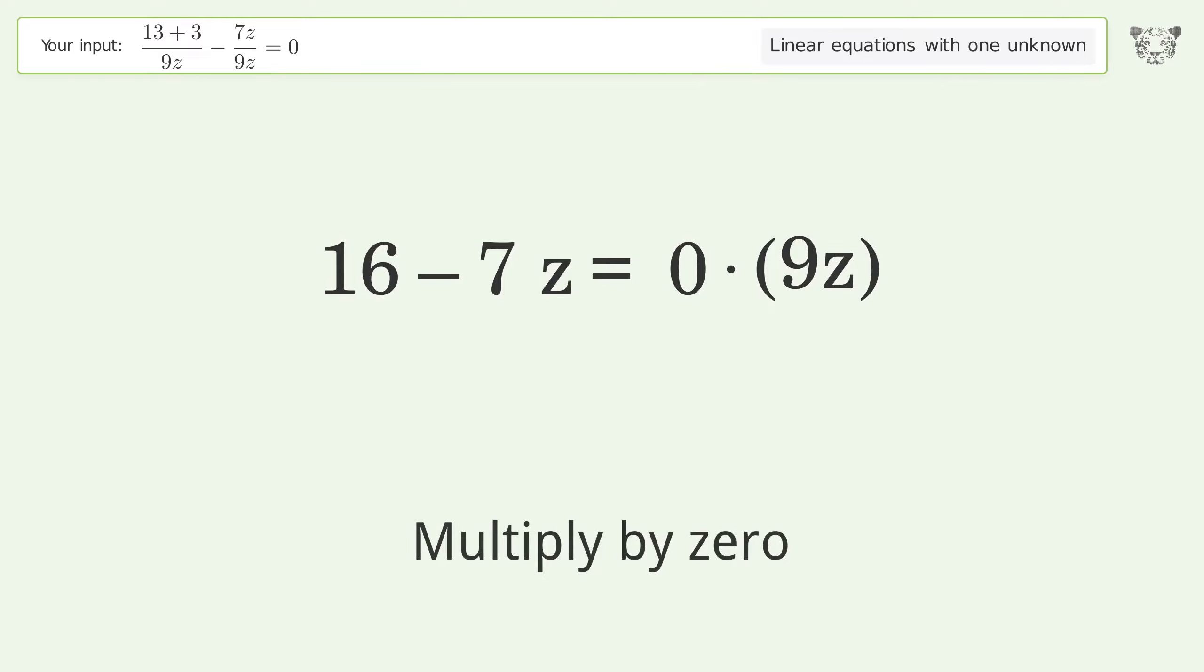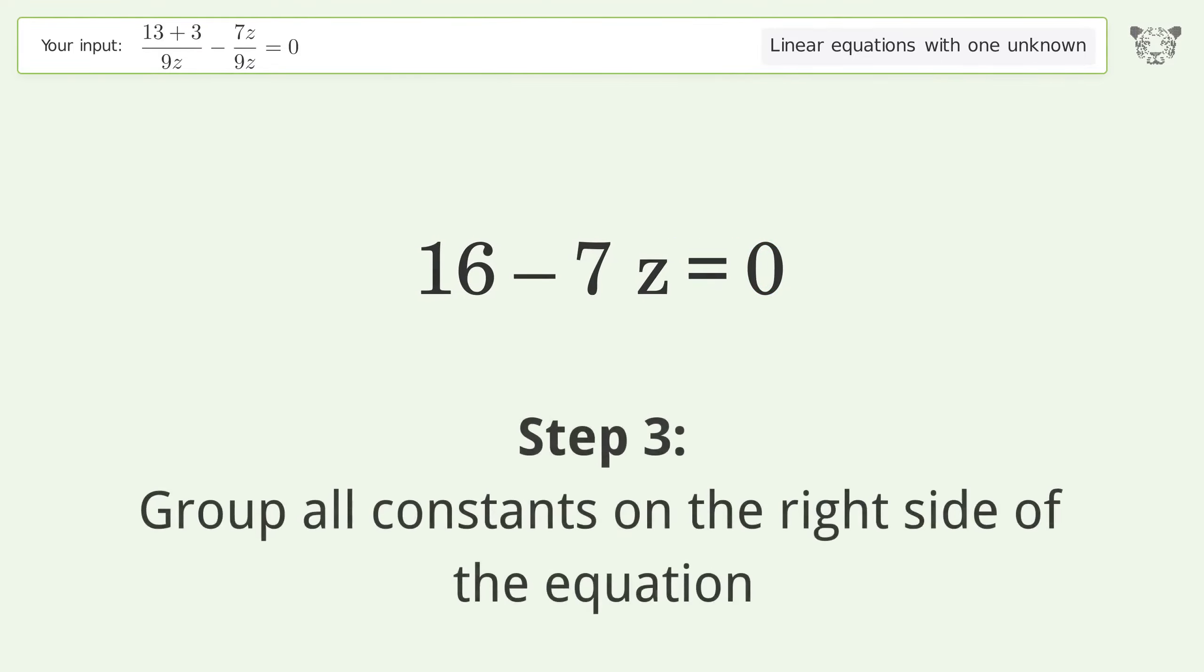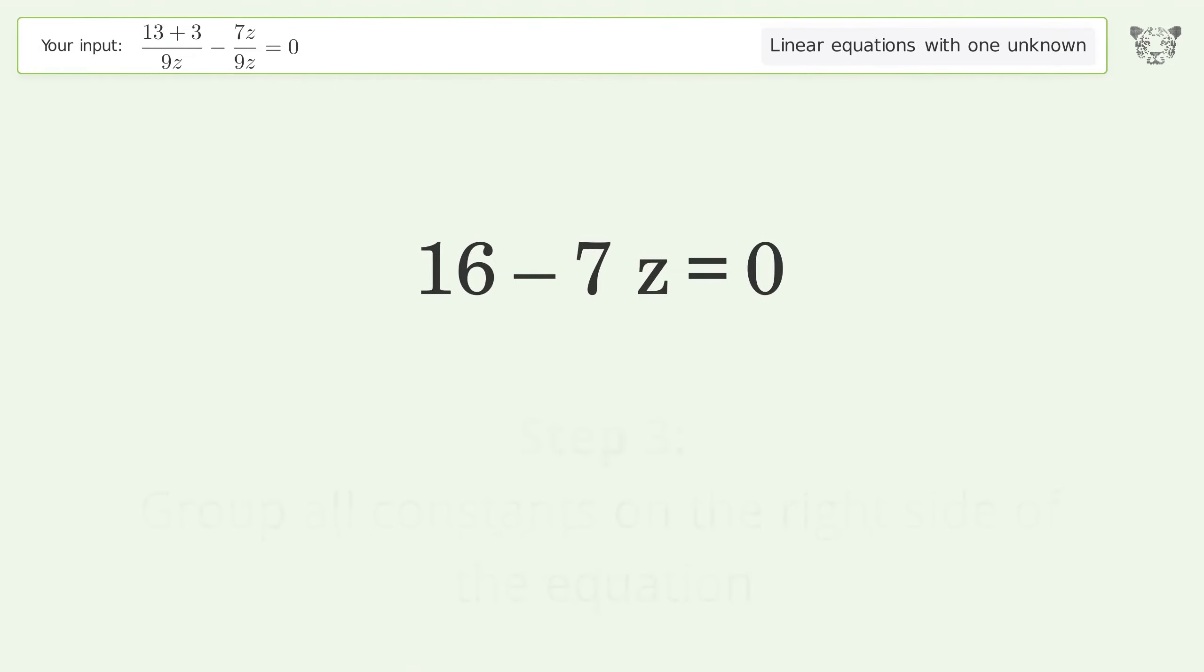Multiply by 0. Group all constants on the right side of the equation. Subtract 16 from both sides.